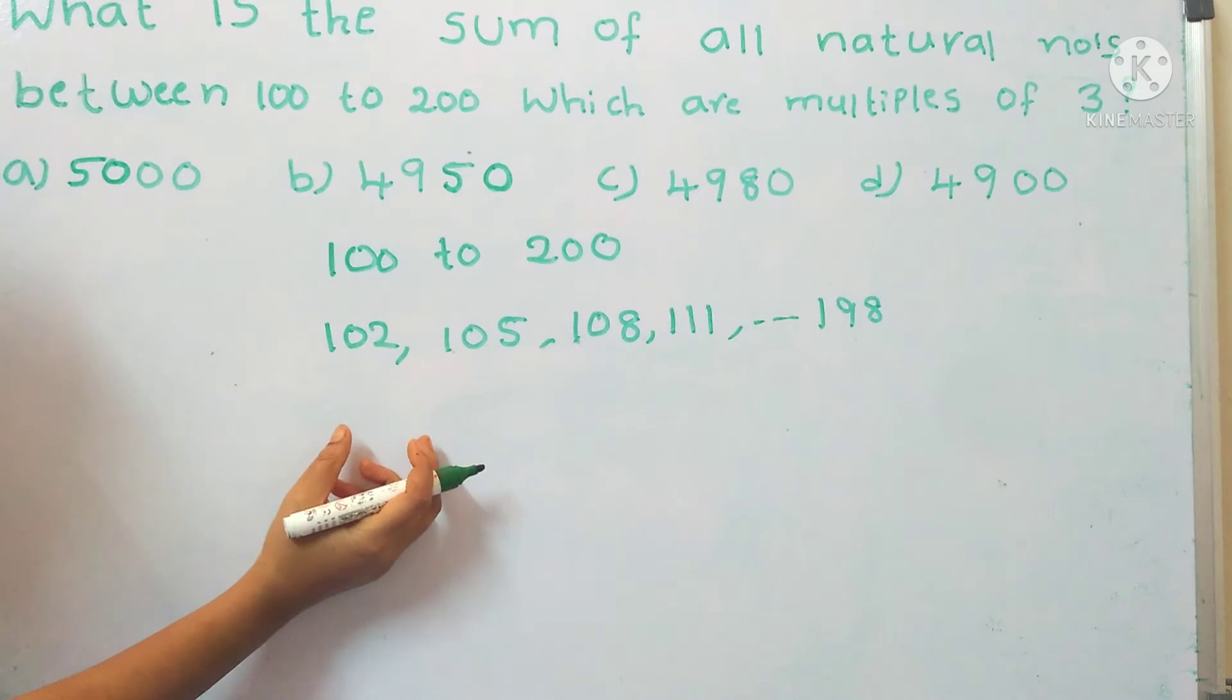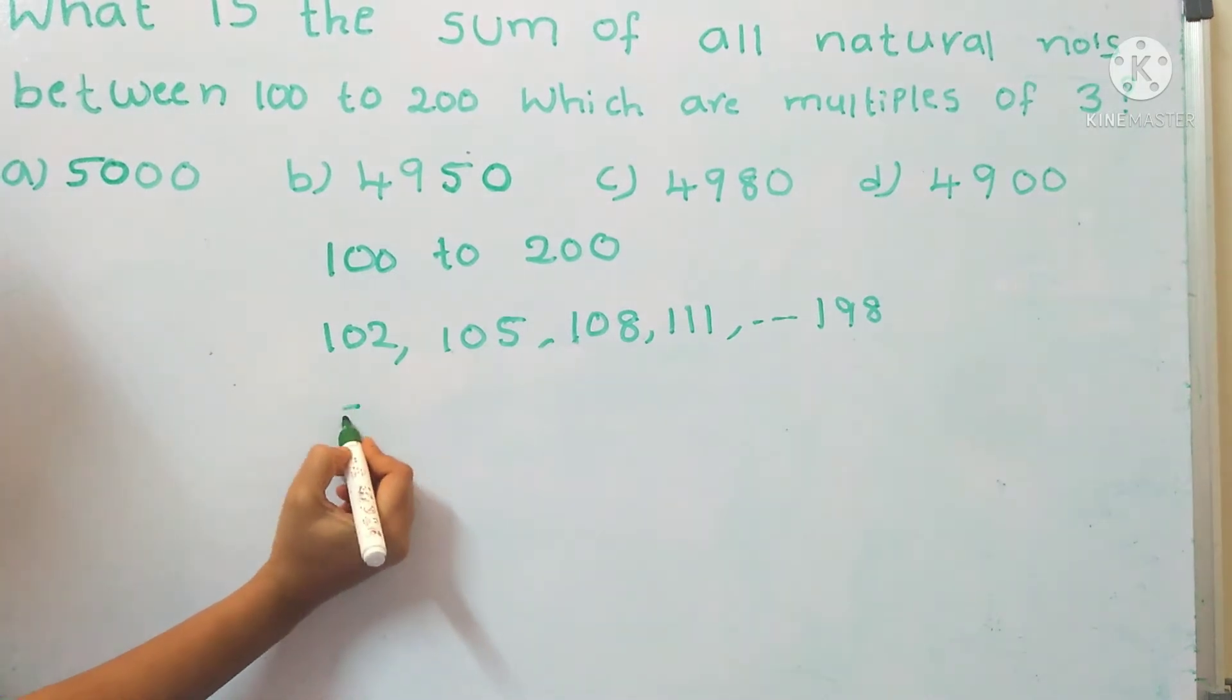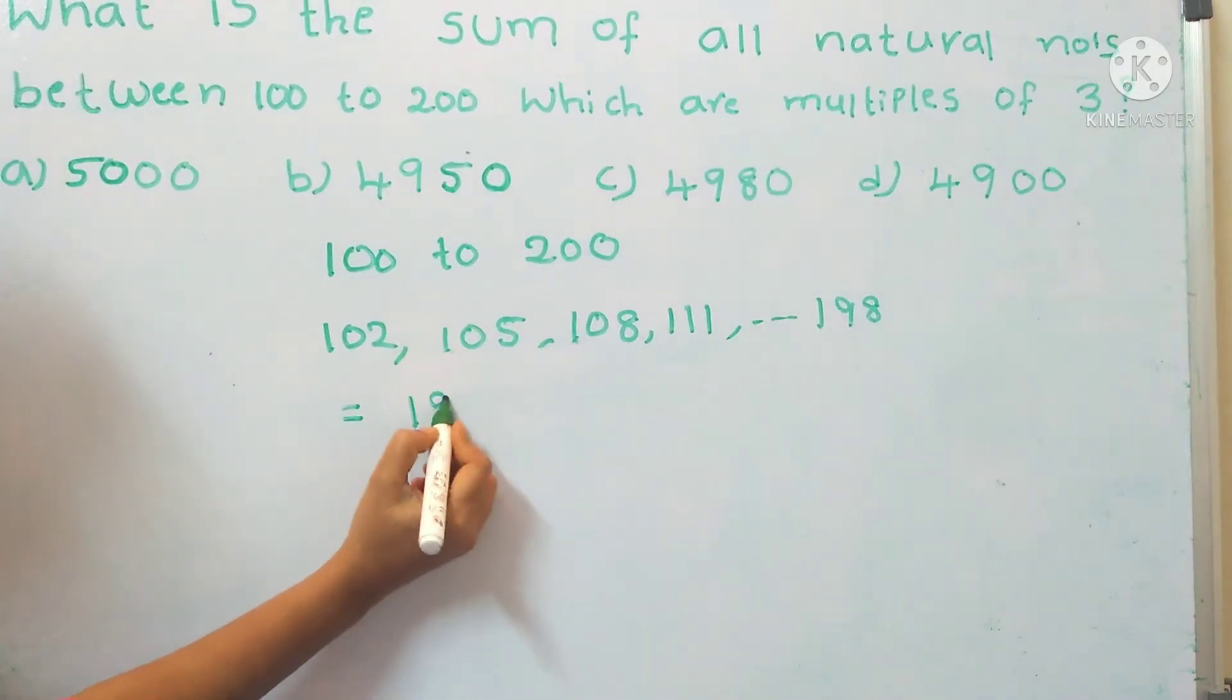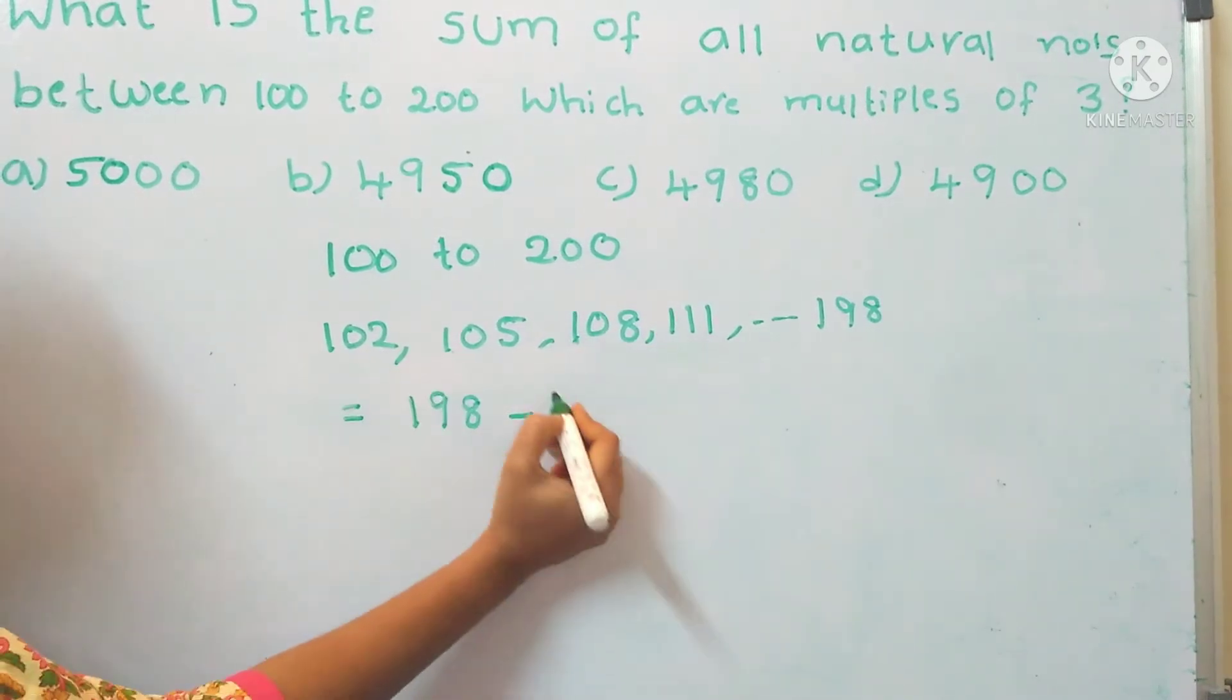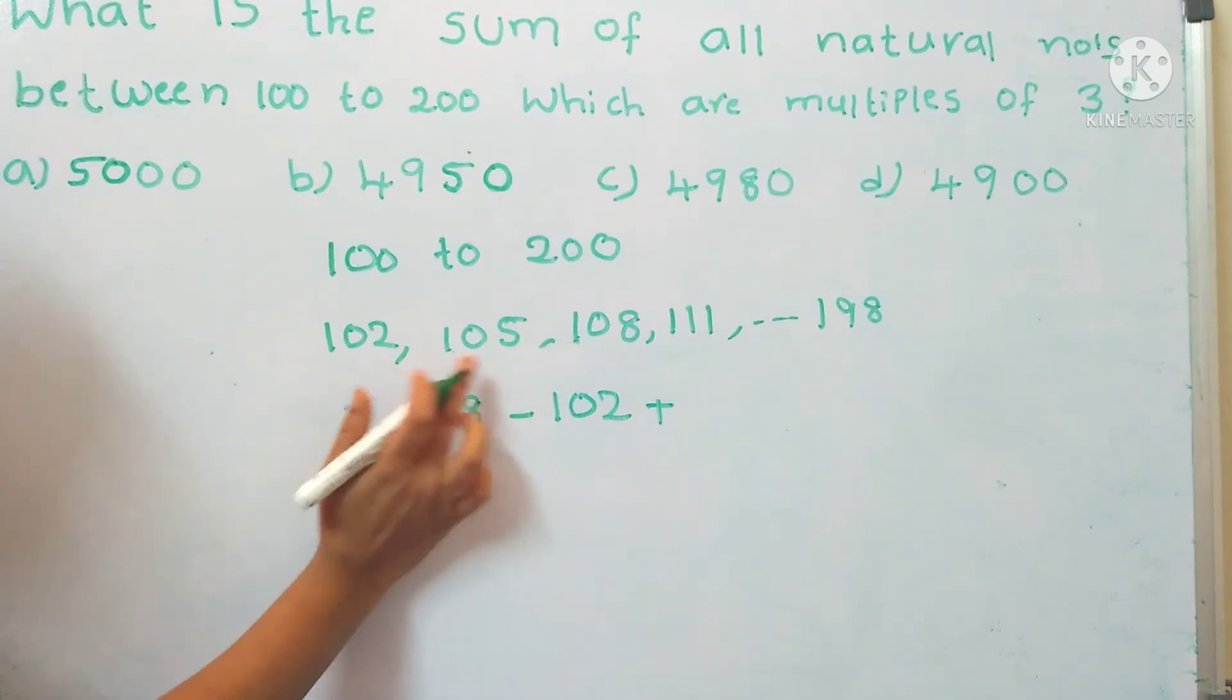For that, we have a shortcut method: last term 198 minus first term 102 plus difference, divided by difference. Here the difference is 3.